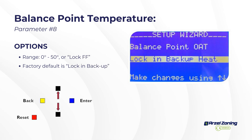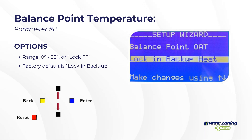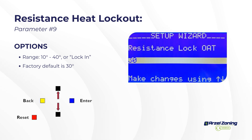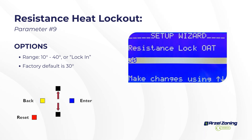Balance point OAT is the changeover temperature from heat pump to fossil fuel backup. If you don't have a heat pump, set it to 'lock in backup' — that's the factory default. If you have a heat pump, once the outdoor temperature reaches the balance point, the heat pump is disabled and only fossil fuel backup runs. The lock OAT efficiency setting for all-electric applications disables electric backup heat until a specific outdoor temperature is reached, saving customers electricity.